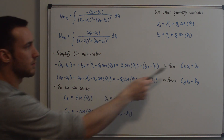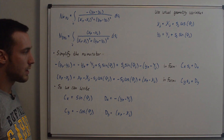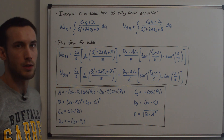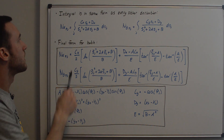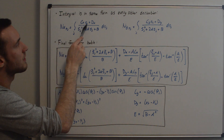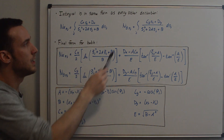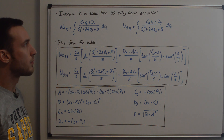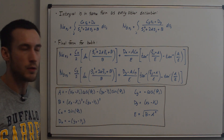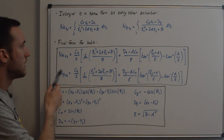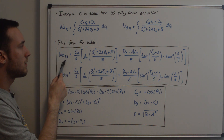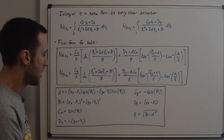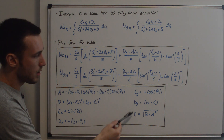Both numerators are in the familiar linear form: for Nx it's c_x times s_j plus d_x, and for Ny it's c_y times s_j plus d_y. The integral form is the same as in every other derivation — Nx as (c_x s_j + d_x) over the familiar denominator, and Ny as (c_y s_j + d_y) over the same denominator. The final closed-form solution has already been derived in the I_ij derivation video.